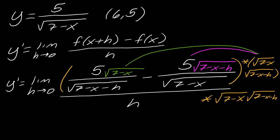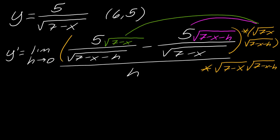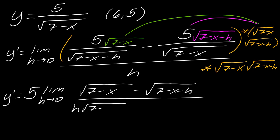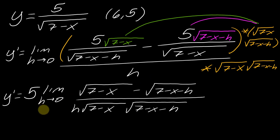Let me make some space and write out what we're left with. Now I have to think about this particular limit. The first thing that comes to mind is can I just go ahead and evaluate it? Well, if I plug h equals 0 in, I actually end up with 0 over 0. If you don't believe that, pause the video here and take a second to convince yourself. So basically we now have to figure out what else we can do to this problem.